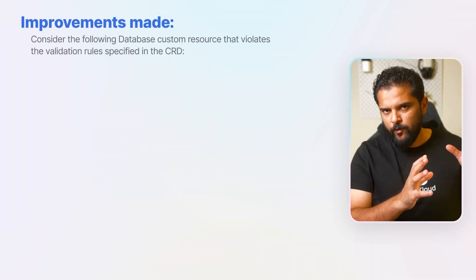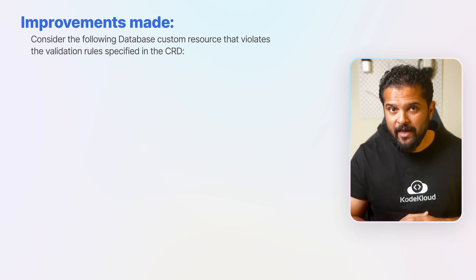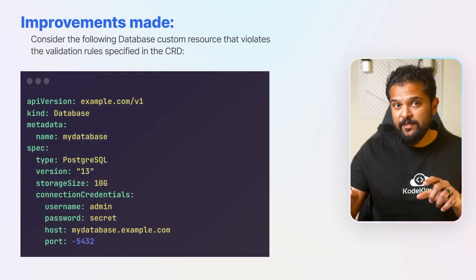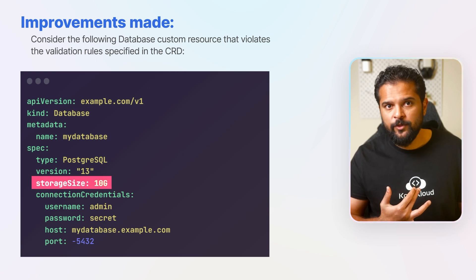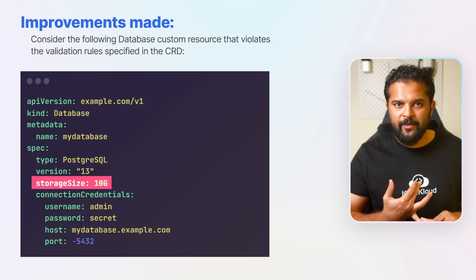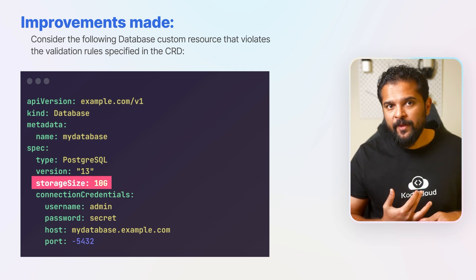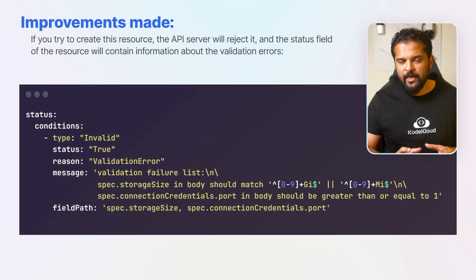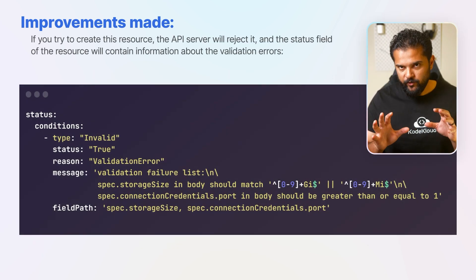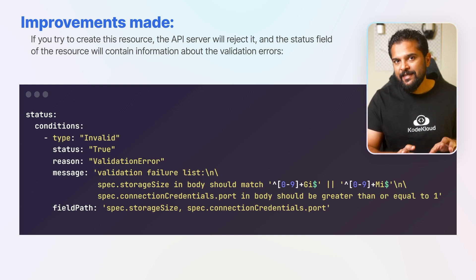Consider a database custom resource that violates the validation rules specified in the CRD. In this example, the storageSize field has a value of 10g which does not match the required pattern of ending in Gi or Mi, and the port field has a negative value which is also not allowed. If you try to create this resource, the API server will reject it and the status field will contain information about the validation errors. This integrated approach reduces the need for external tools and streamlines the entire CRD schema validation process.